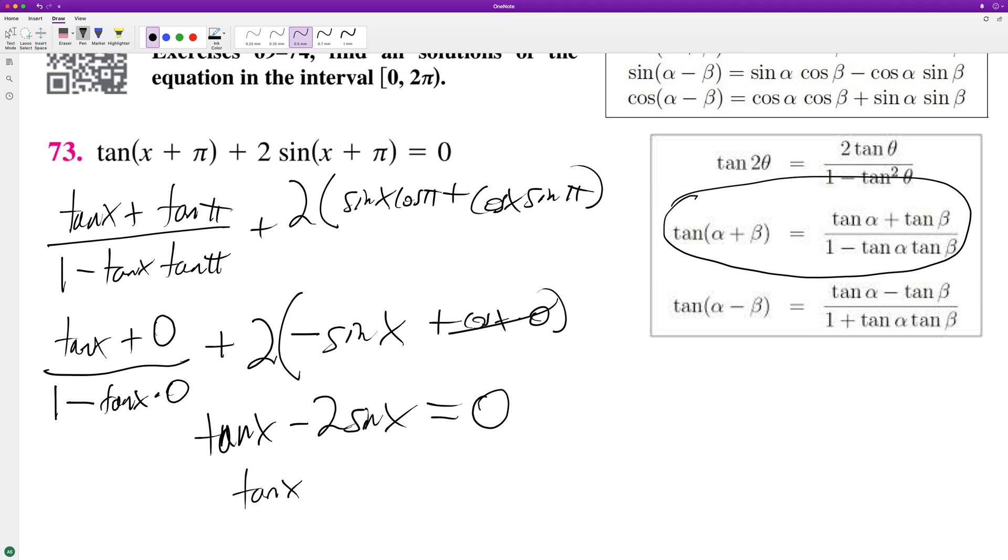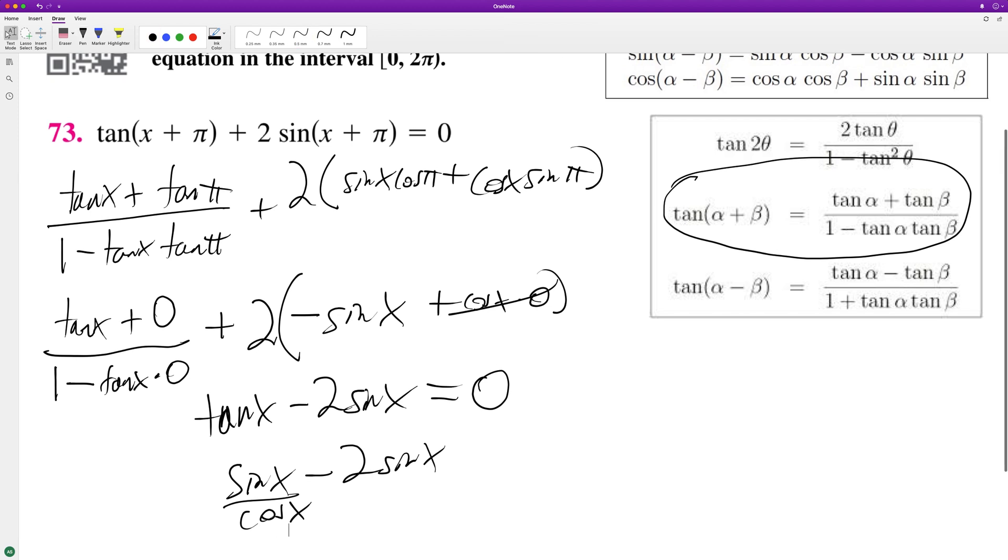Tangent of x equals 2 sine of x. Trying to think how to do this correctly. It actually might be better if I break this down, so tangent is equal to sine of x. So sine of x minus 2 sine of x over cosine of x.